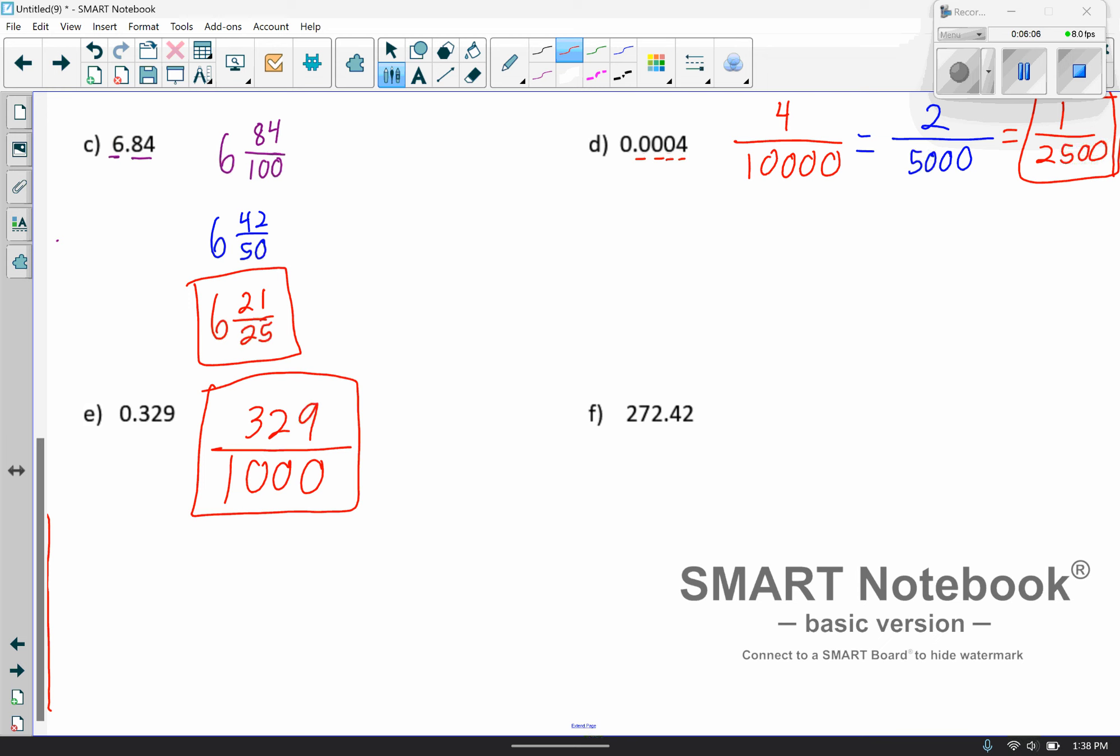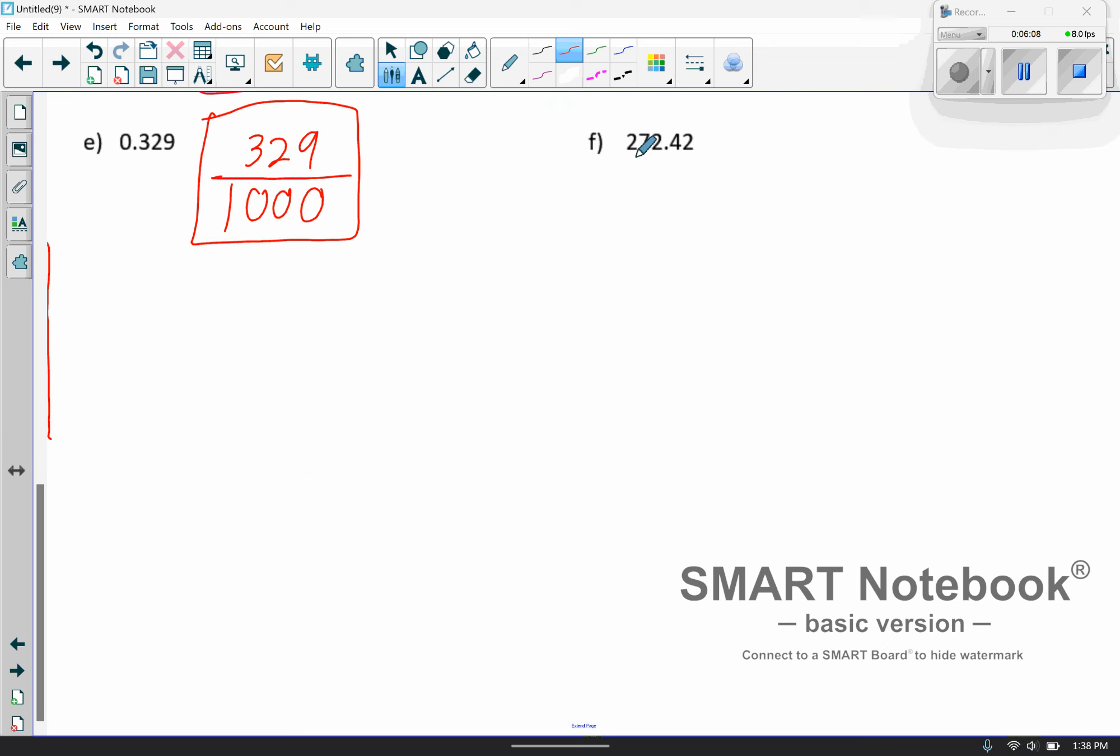Okay, one more. So F. So we have 272.42. So we'll take the 272, and then we'll take the 42 and put it over 1 followed by two 0s. So 100, 42 hundredths.